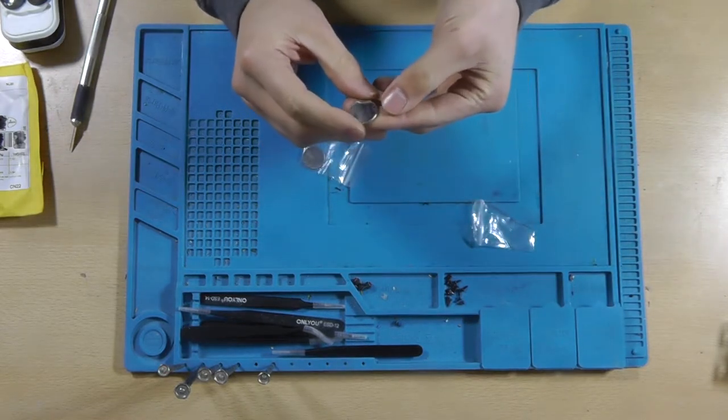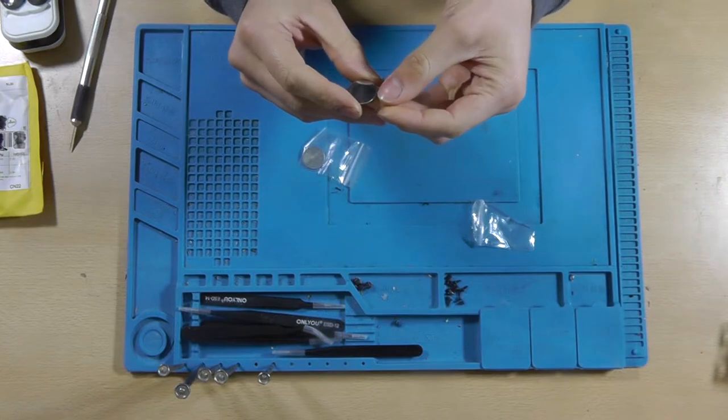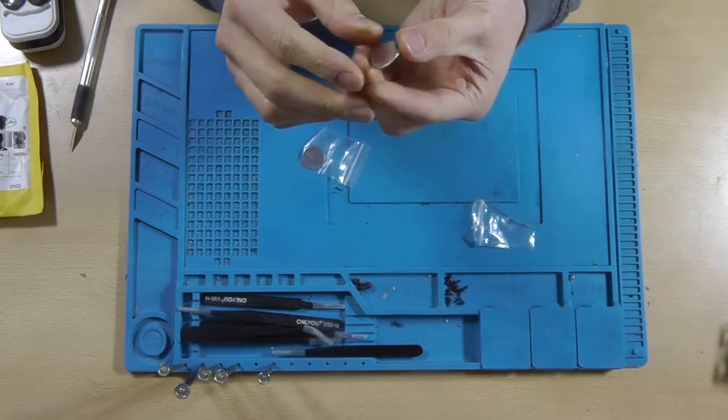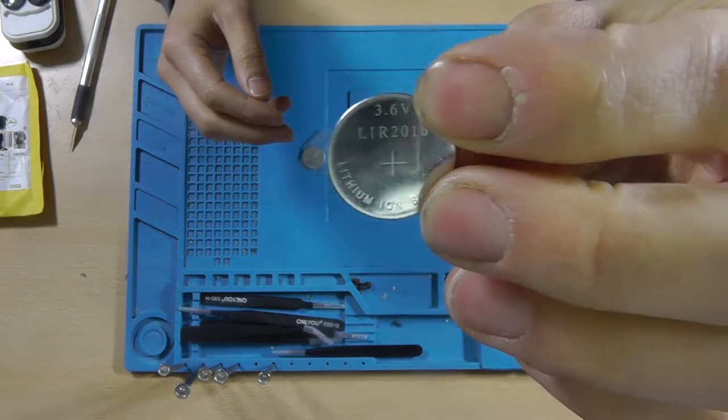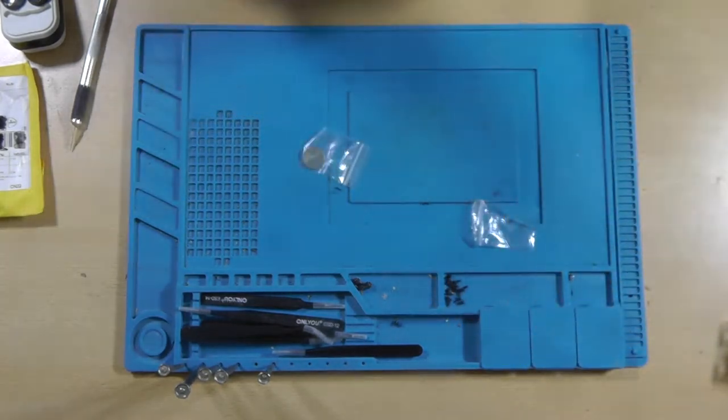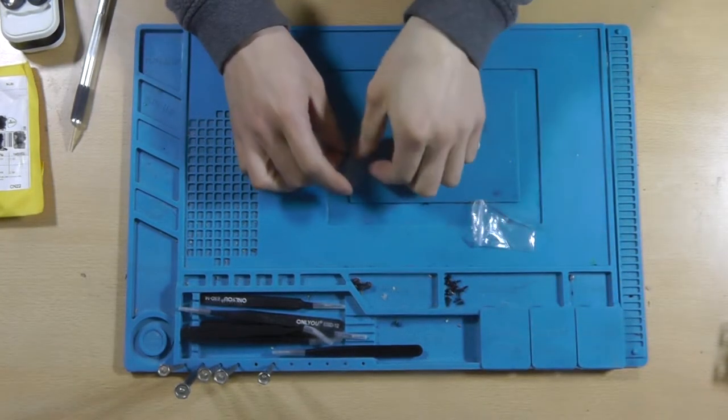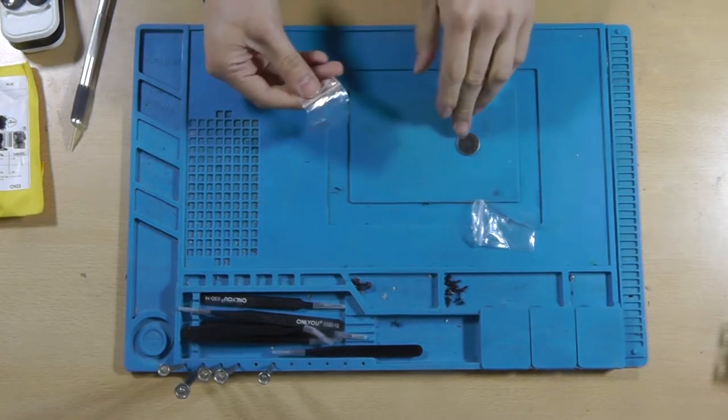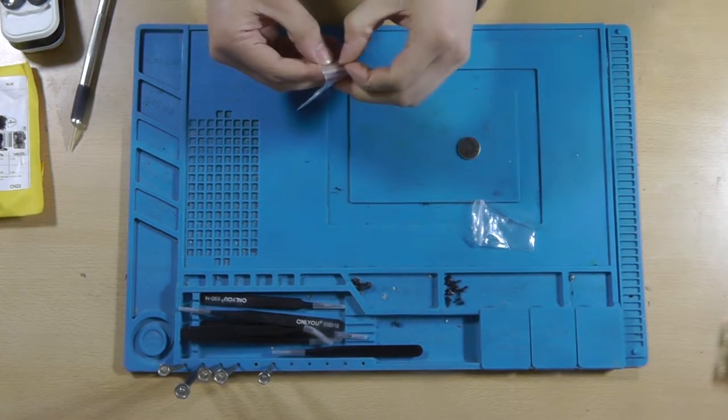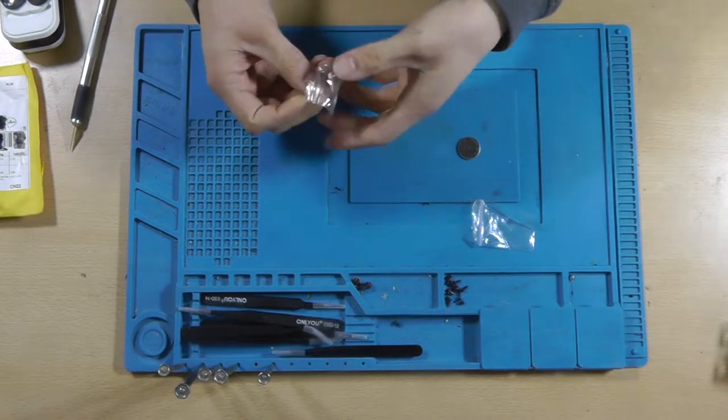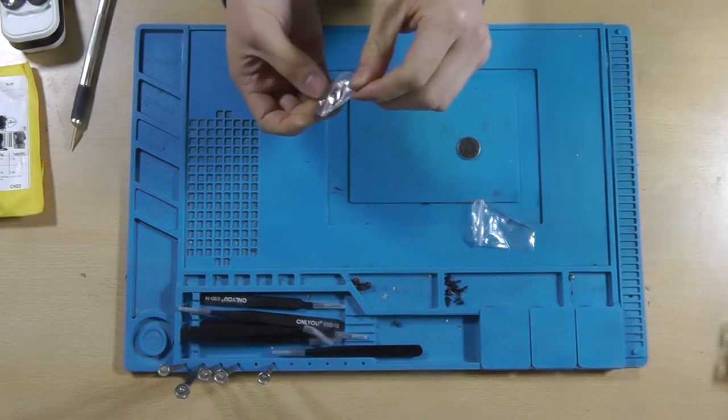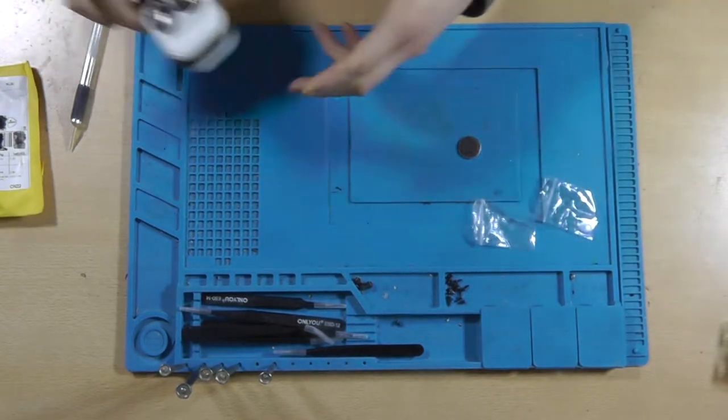Let's remove these from the packaging. So 3.6 volts, it's a LIR 2016 lithium ion battery, and although it doesn't list it on the battery itself, these should be rechargeable. So I've got my charger ready to go.